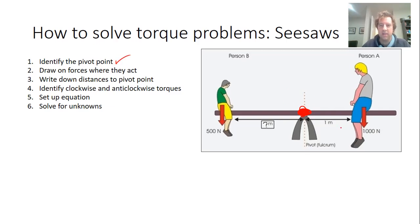Okay, draw the forces where they act. I'm just going to redraw them. Person A has a force of 1000 newtons. Person B has a force of 500 newtons.